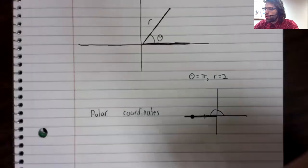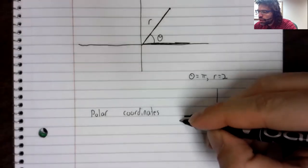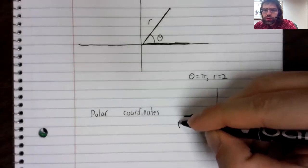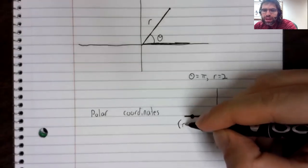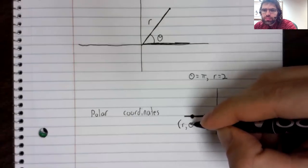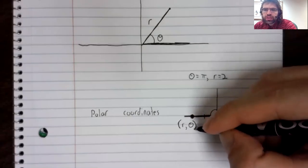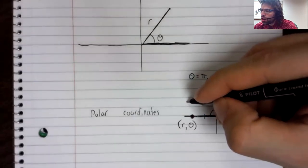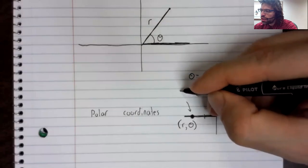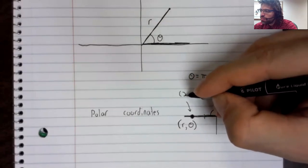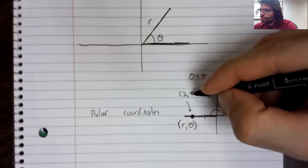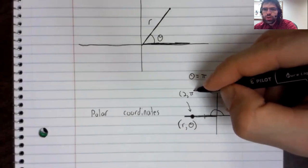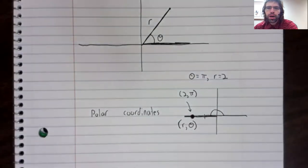When we want to specify a point, we still use ordered pairs. But now instead of x, y, we have r, theta. So this is the point 2 comma pi.